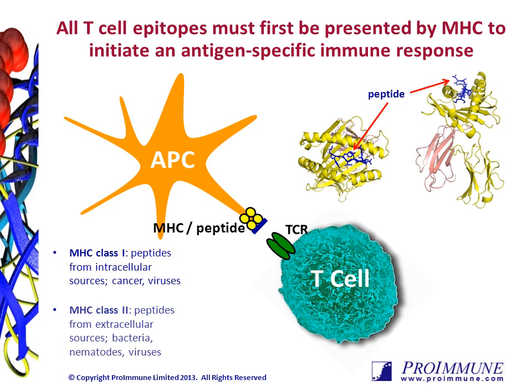On the other hand, proteins that are extracellular in origin, for example bacteria, are presented on MHC class 2 molecules as longer 12-20 amino acid-length peptides to CD4-positive helper T cells.